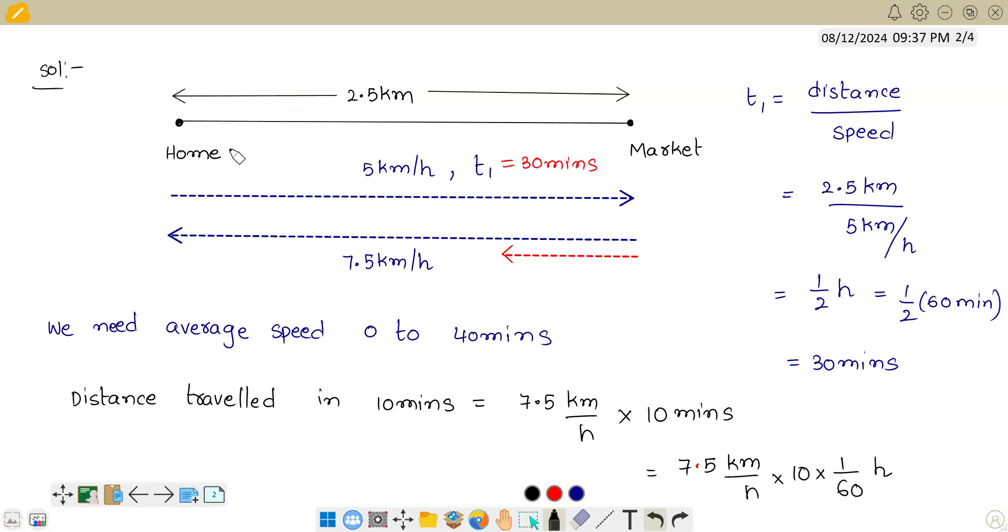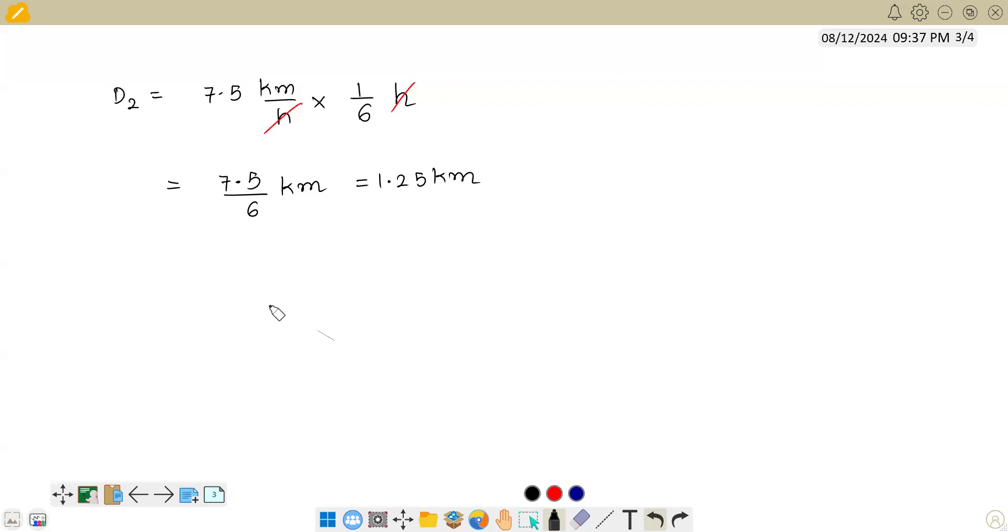As you can see, in forward, it has traveled 2.5, but in reverse, it is only traveling 1.25 km.